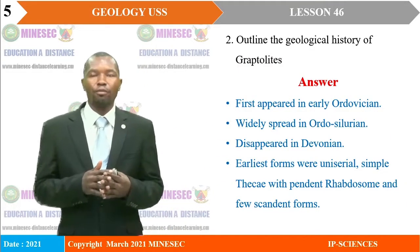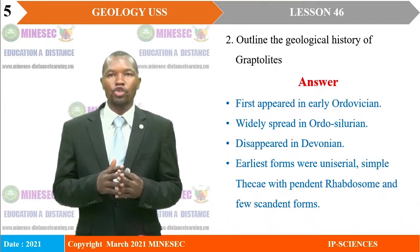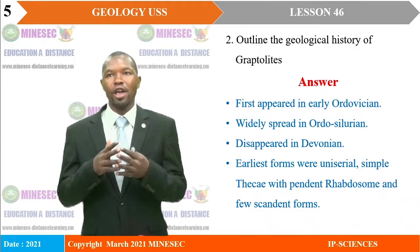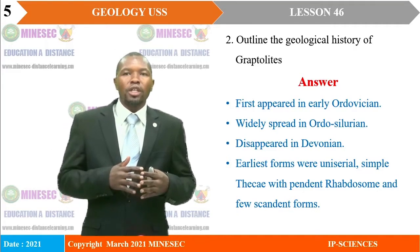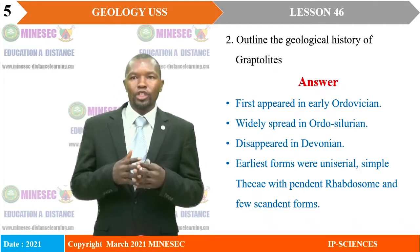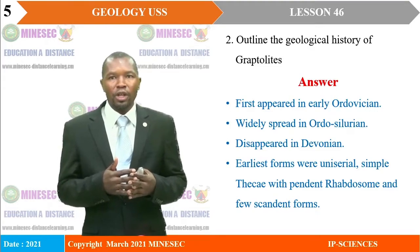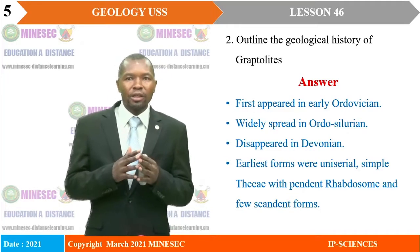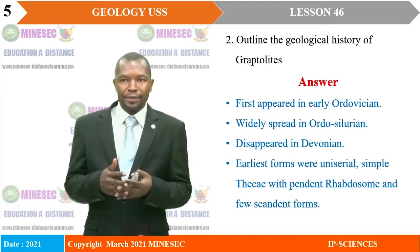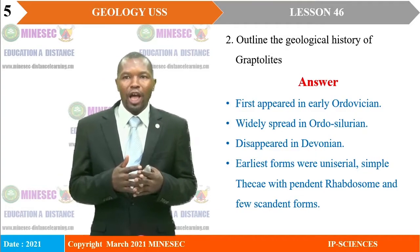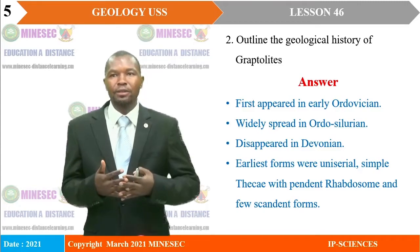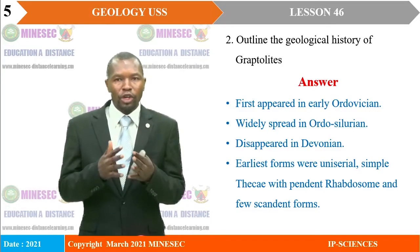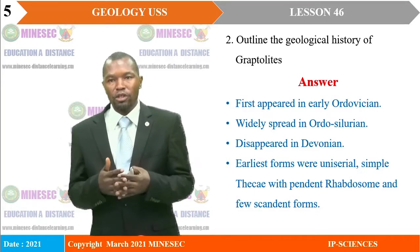The second part of our question requires that we outline the geological history of Graptolites. Graptolites first appeared in the early Ordovician. They were widely spread during the Ordovician-Silurian period. Then they disappeared in the Devonian. The earliest forms were Uniseral with a simple thecae. They most likely had a pendant rhabdosome, and there were few in number — and those few cases were Scandent forms.